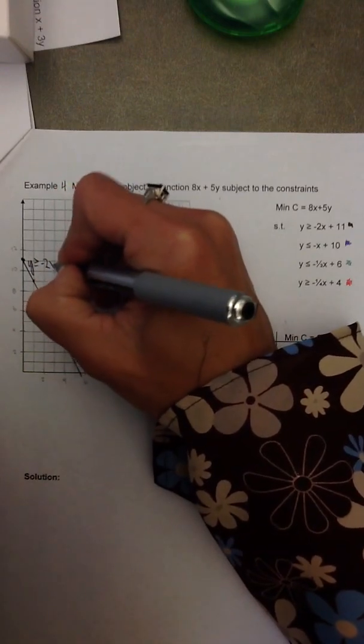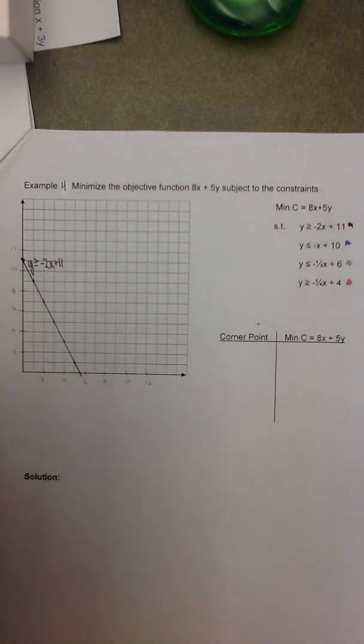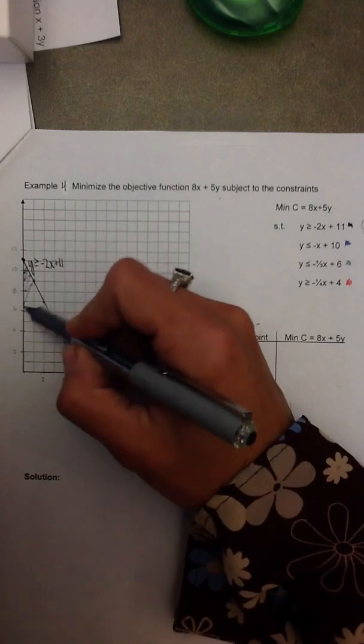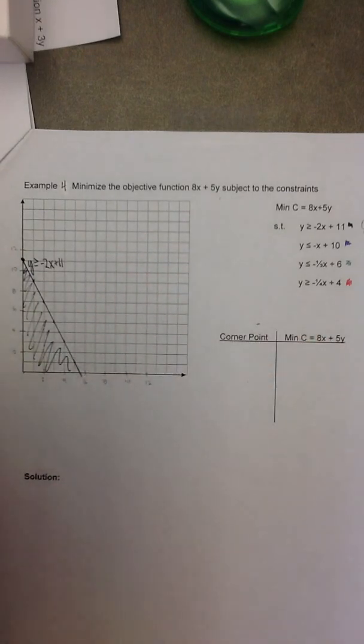And I'm also going to label this as y is greater than or equal to negative 2x plus 11, so that there's no confusion. Now we have to decide which side to shade. In this example I'm going to shade or cross out the false sides of the line. So if I pick a test point of 0,0, and I replace both x and y values with 0, it's 0 is greater than or equal to basically 0 plus 11. So that's 0 greater than or equal to 11, which gives me a false statement. So 0,0 is the test point that gives me a false statement. Therefore we're going to cross out or shade the false side of that line.